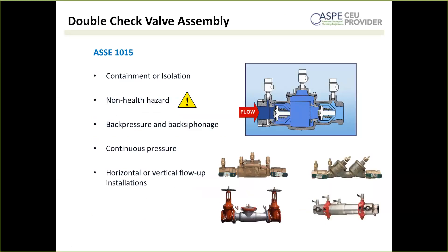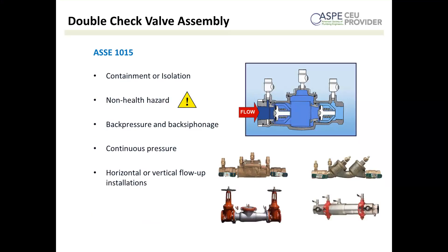Double check valve assemblies, ASSE 1015, are typically available from half-inch all the way up to 10-inch sizes. These are for containment or isolation — point of source or point of use — for non-health hazard applications, and they handle back pressure, back siphonage, and continuous pressure. They can typically be installed horizontally or vertically with flow going up. Like dual checks, these are essentially two single checks. The main difference is that they must be testable — you'll notice four test cocks on every example: one upstream, one downstream of the first check, one in the zone between the two checks, and one after the second check.